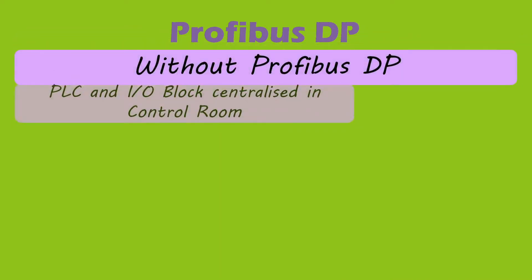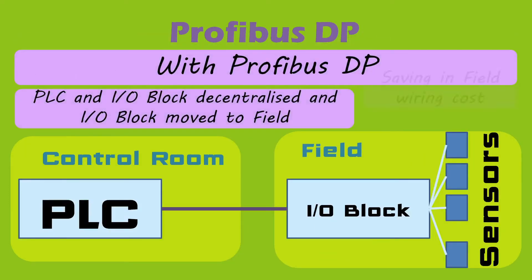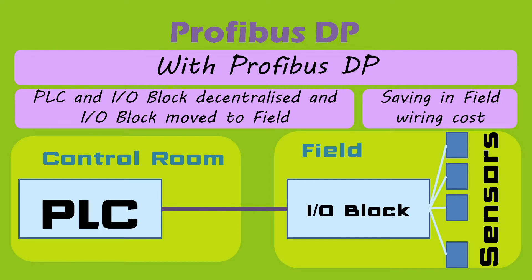Profibus DP stands for Decentralized Peripherals or Distributed Peripheral. Initially, all IO blocks or peripherals were installed in control room panels and sensors were connected through wires from the IO block to the field — meaning everything was centralized. With Profibus DP, the IO block could be carried to the field and sensors connected to the IO in the field itself, with information transmitted through Profibus to the central controller in the control room. Thus, the IO block was decentralized, and the variant was named Profibus DP.